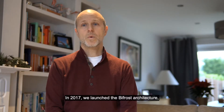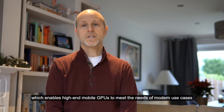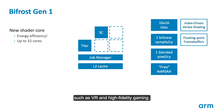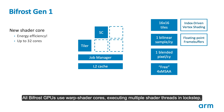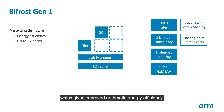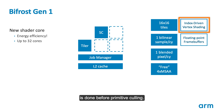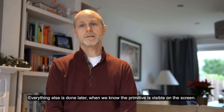In 2017, we launched the Bifrost architecture, which enables high-end mobile GPUs to meet the needs of modern use cases such as VR and high-fidelity gaming. All Bifrost GPUs use warp shader cores, executing multiple shader threads in lockstep, which gives improved arithmetic energy efficiency. We also introduced index-driven vertex shading, an approach which splits vertex shaders so only position calculation is done before primitive time. Everything else is done later, when we know the primitive is visible on the screen.